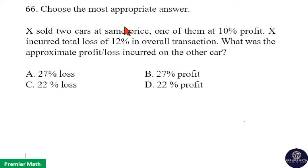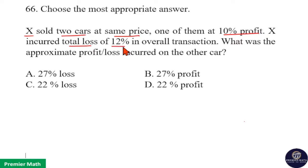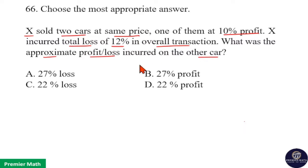Choose the most appropriate answer. X sold two cars at the same price. One of them at 10% profit. X incurred a total loss of 12% in the overall transaction. What was the approximate profit or loss incurred on the other car?